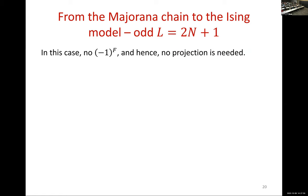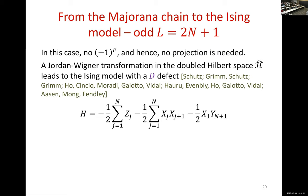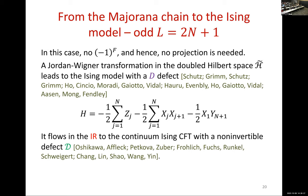Let me go briefly through odd L. In this case there is no (−1)^F, and hence no projection is needed. We can do the Jordan-Wigner transformation and land on this Hamiltonian — recall this is the one whose quantization could be questioned because we started with an odd number of fermions. We just blindly quantize it, and we land on this Hamiltonian which had already been written by previous authors. It flows in the infrared to the continuum Ising model with the non-invertible operator D which I discussed earlier.